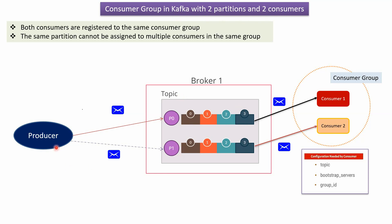Here you can see the producer, which generates messages and publishes them to these two partitions in a random manner. Here you can see consumer 1 and consumer 2. Both consumers are registered to the same consumer group. Consumer 1 is assigned to partition 0 and consumer 2 is assigned to partition 1, so each consumer will consume messages only from its assigned partition.